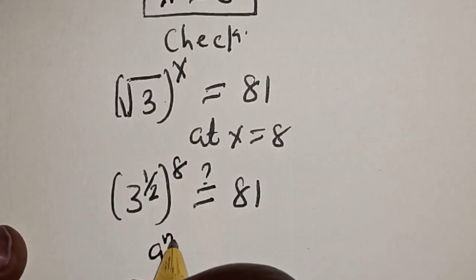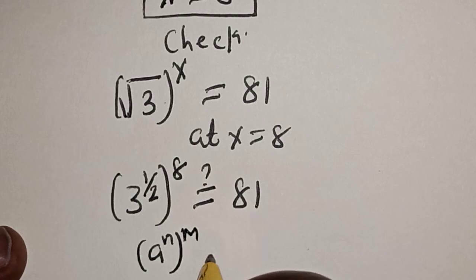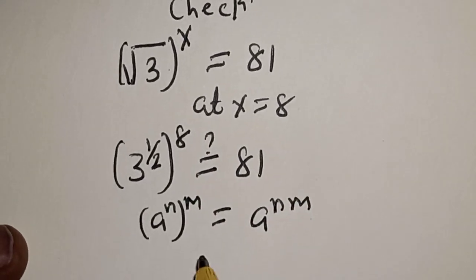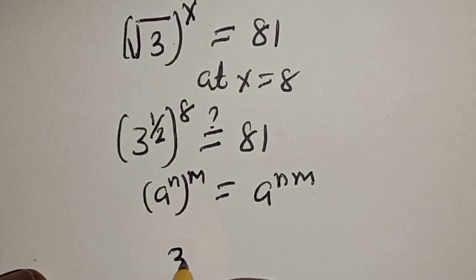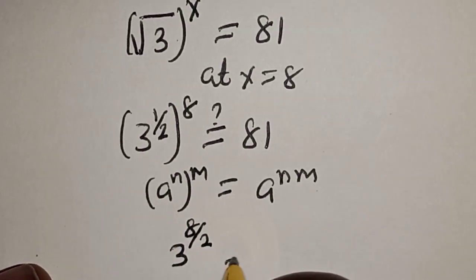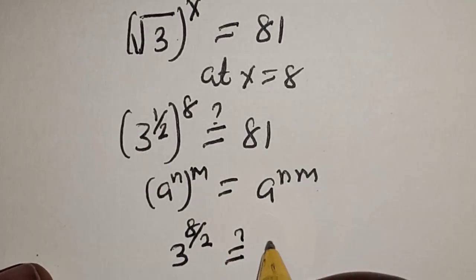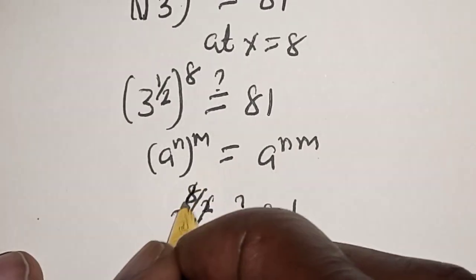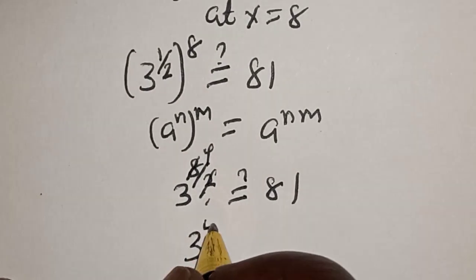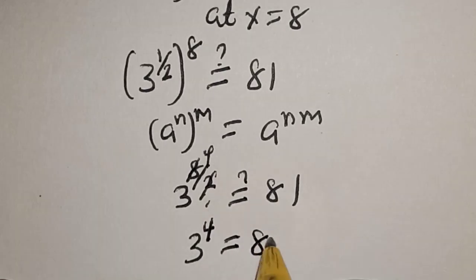So a raised to power n raised to power m is equal to a raised to power nm. So this becomes 3 raised to power 8 over 2 must be equal to 81. Then 3 raised to power 4 is equal to 81.